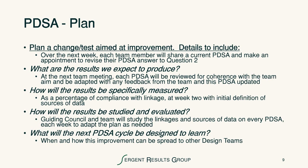The plan in this case is that on a weekly basis each team member would share a current PDSA and make an appointment to revise their PDSA and answer question two. The expected results are that at the next team meeting thereafter, every PDSA would be reviewed for coherence with the team's aim and be adapted with any feedback from the team. The results would be specifically measured as a percentage of compliance with the linkage at week two, with the initial definition of the sources of data. The guiding council and team would study the linkages and sources of data on every PDSA each week to adapt the plan as needed.